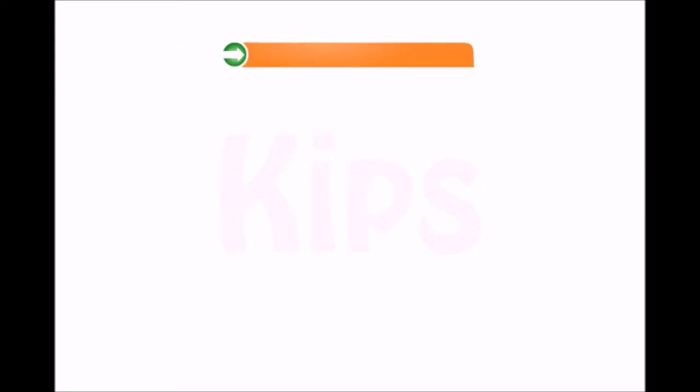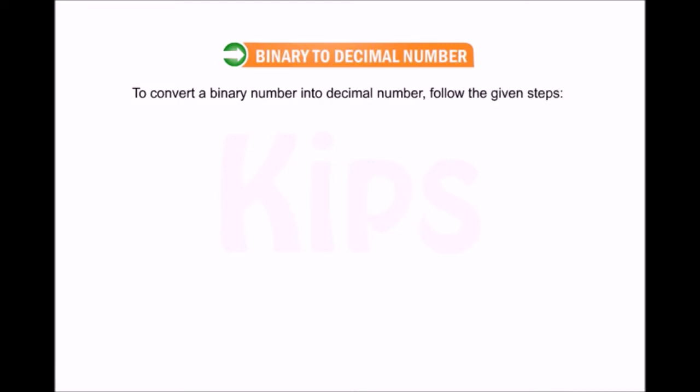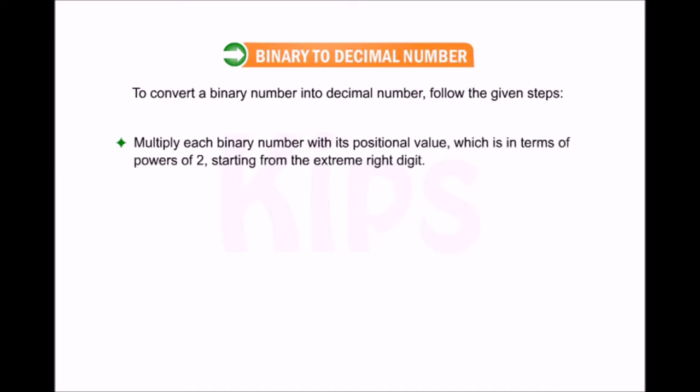Now we shall learn how to convert from binary number to decimal number. To convert a binary number into decimal number, follow the given steps: multiply each binary digit with its positional value, which is in terms of powers of 2, starting from the extreme right digit. Increase the power 1 by 1, keeping the base fixed as 2. Sum up all products to get the decimal number.